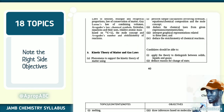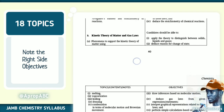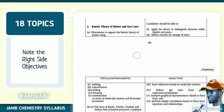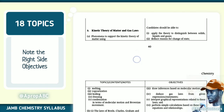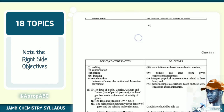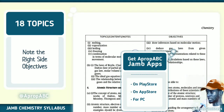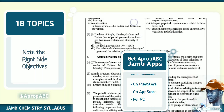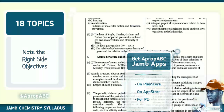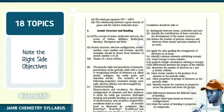Topic two is chemical combination — we have Avogadro's law, law of definite composition, note that. Topic three is the kinetic theory of matter and gas laws, note that. Topic four is atomic theory and bonding, note that.